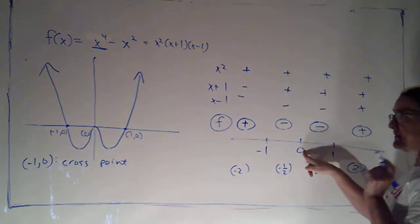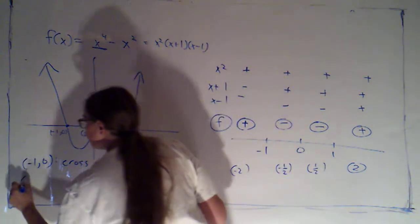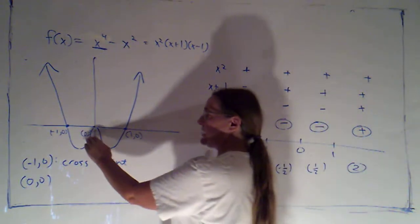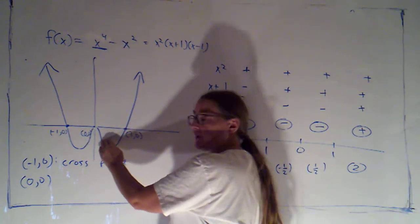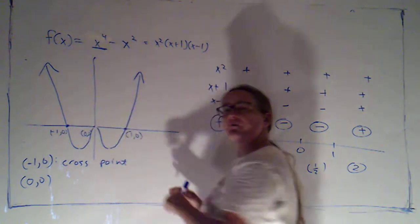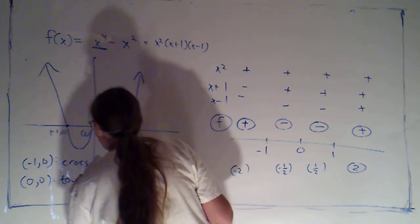My next zero was zero. The corresponding x-intercept was the origin, zero, zero. And if we look there, the function didn't change sign. It was negative to the left of that point, and it was negative to the right of that point. So, what we did is we touched the x-axis, but we didn't cross over to the other side. And so, we can call that a touch point.